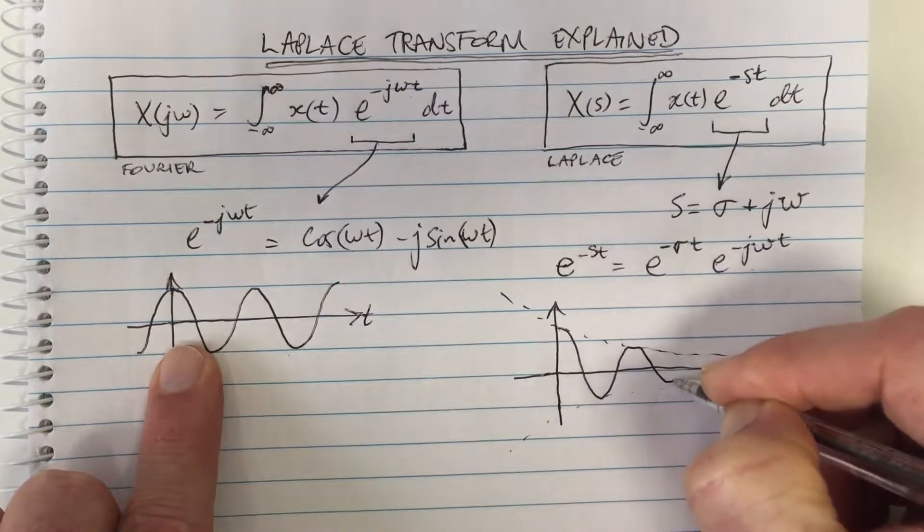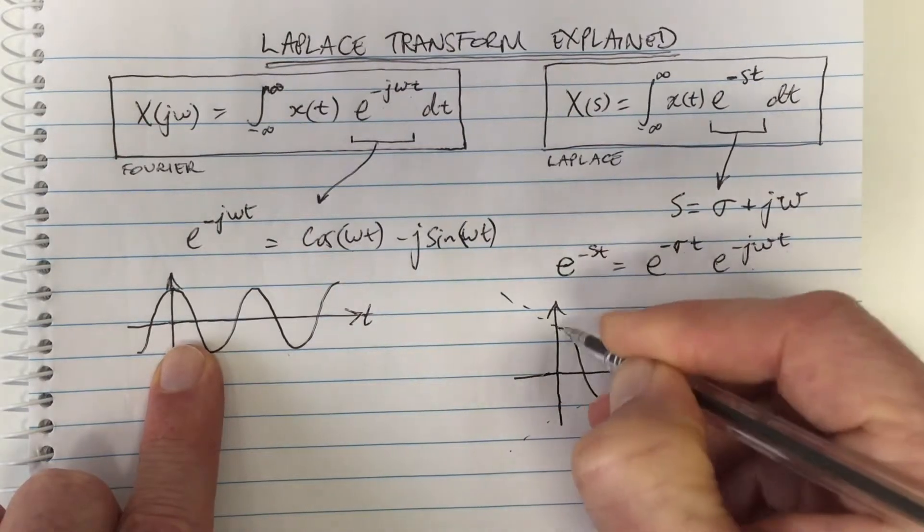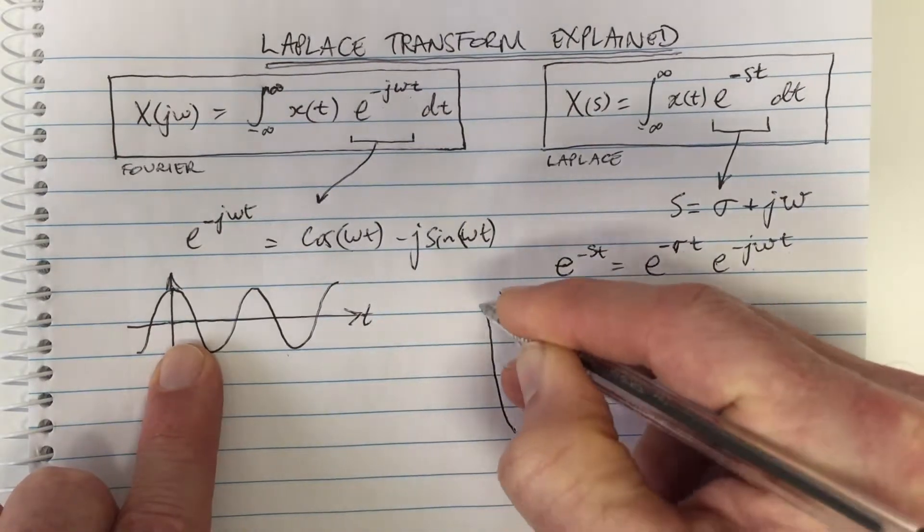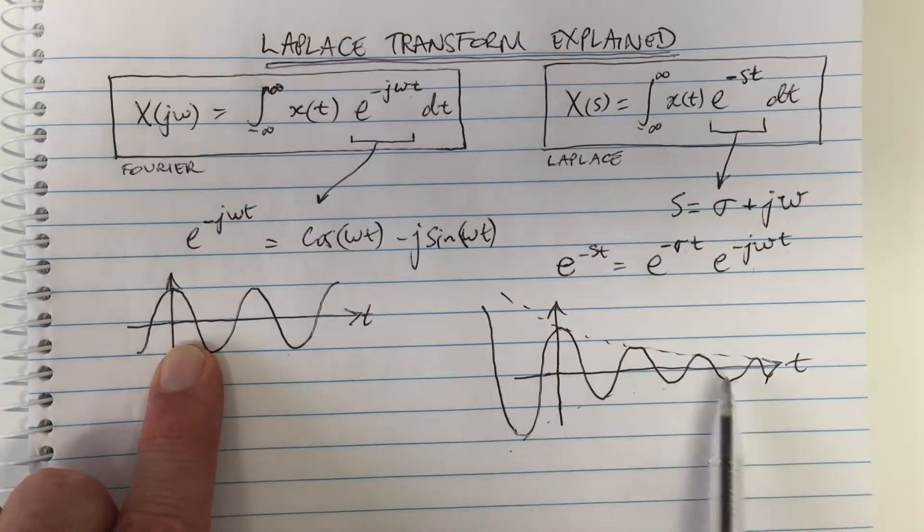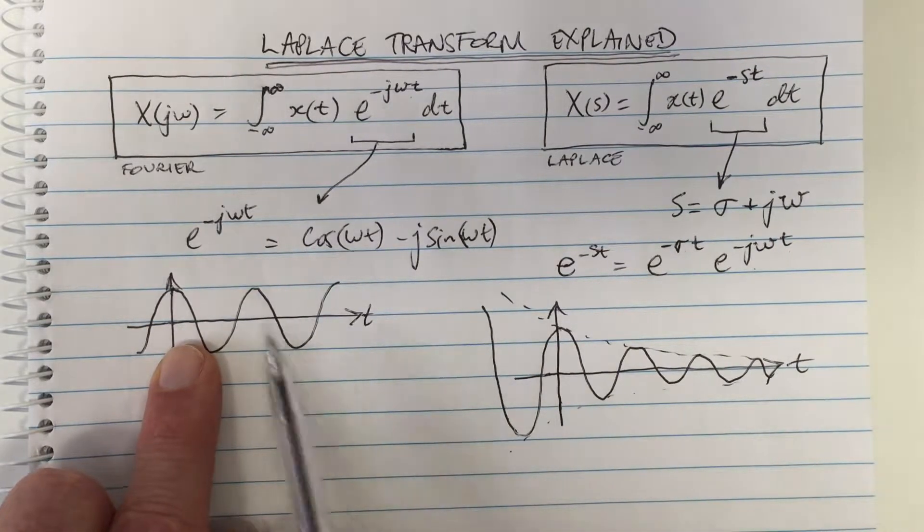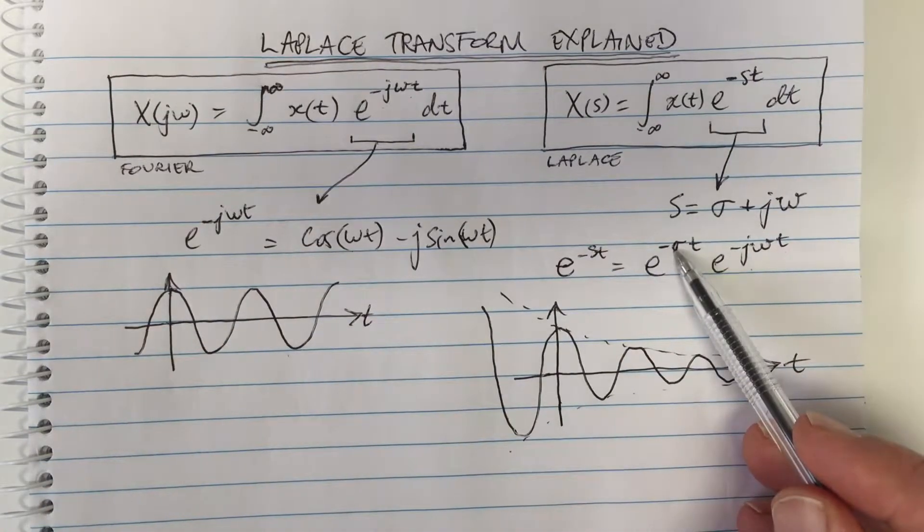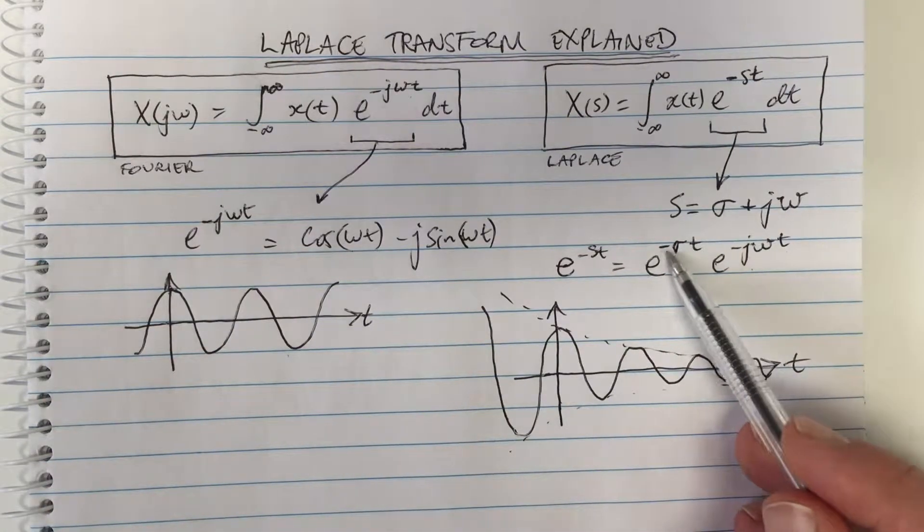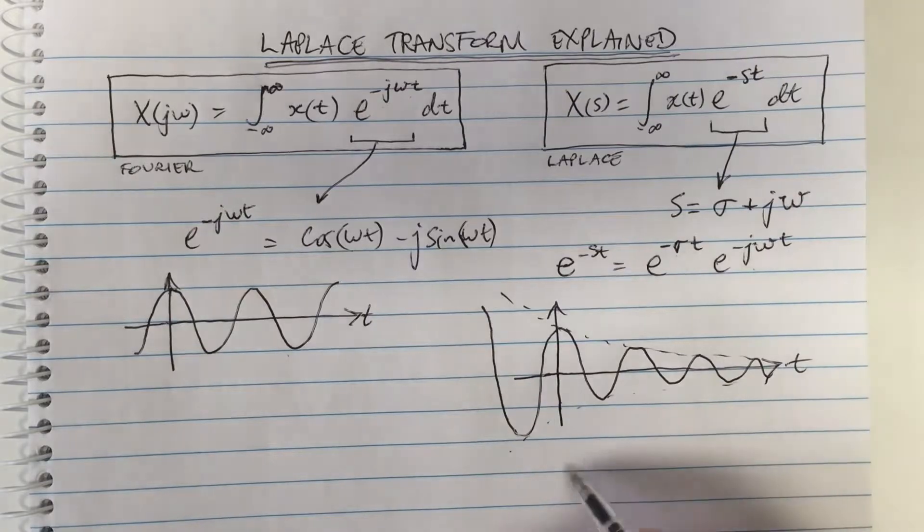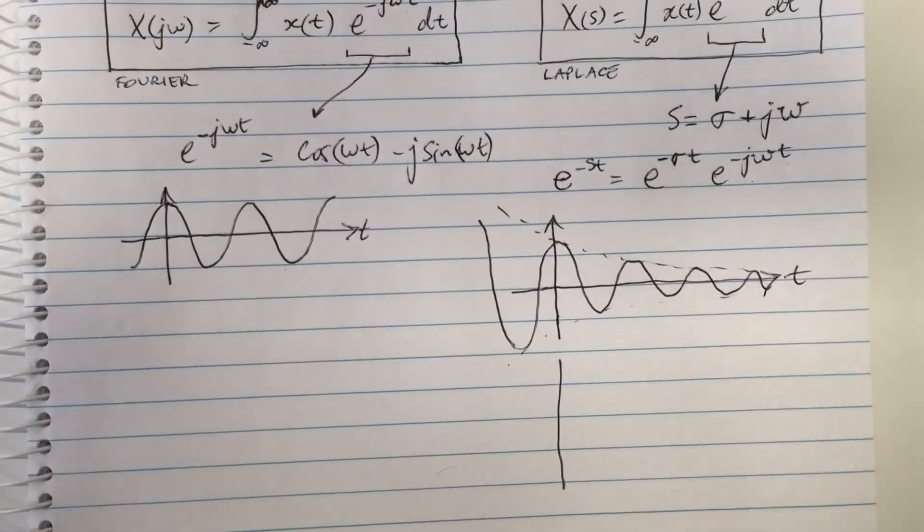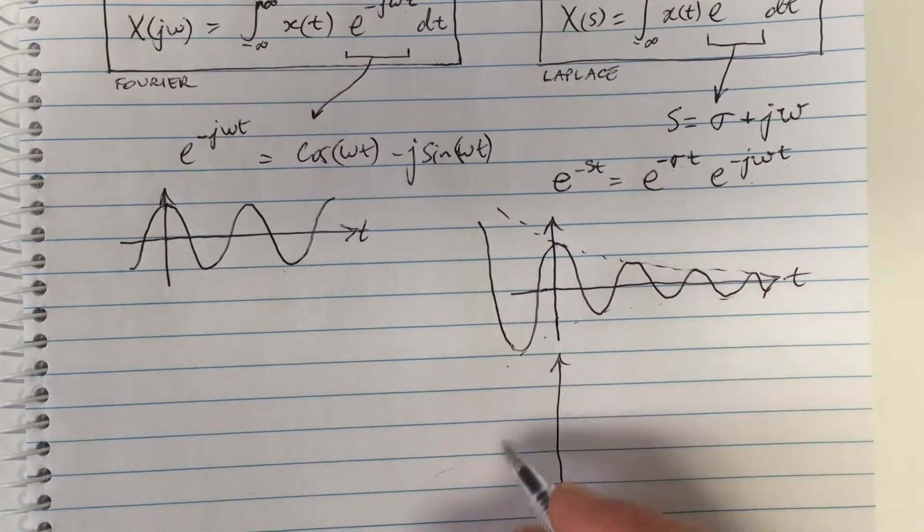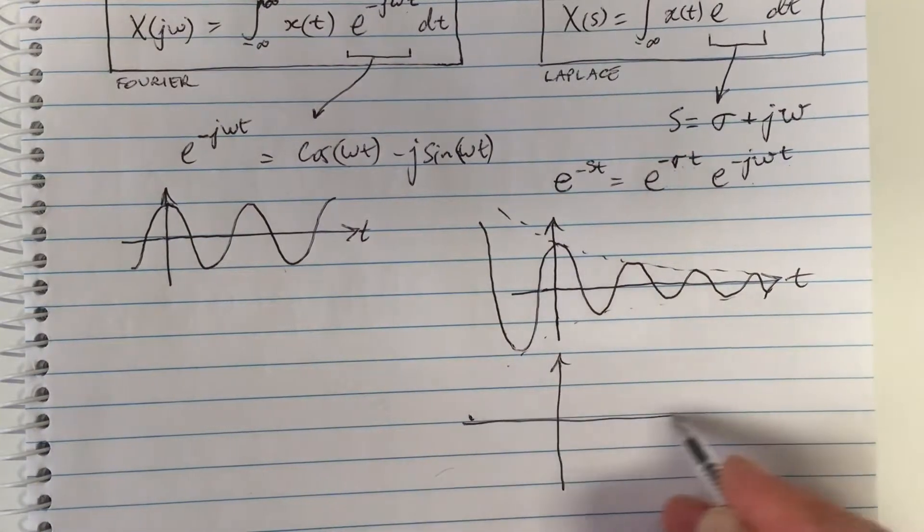So that is this function here, and this is the basis function. For different values of ω, this varies more quickly or more slowly, just as we had before. If σ was negative, then the negatives would cancel and you'd have a positive, so you would have a waveform which is going to allow for growth.